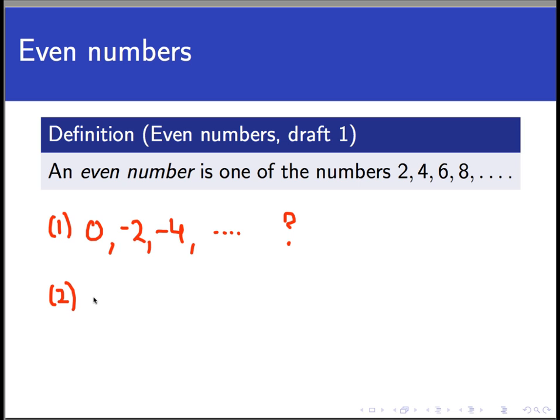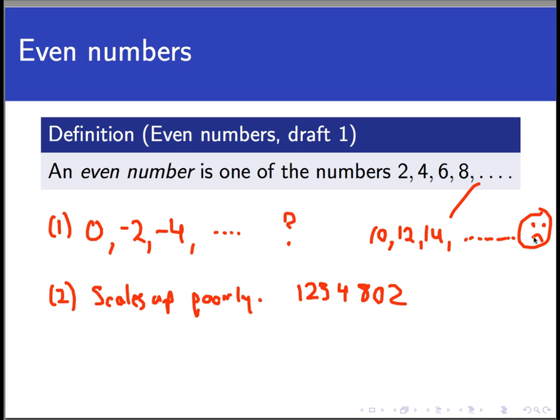And second of all, this definition doesn't scale up well. That means it doesn't provide an easy way to tell if a new number is or isn't even. For example, let's look at the number 123,4802. Now is that number even or not? The only way to tell from this definition is to try to extend the list out until we get into the neighborhood of this number and see if 123,4802 is in it. Now that's really inefficient and takes a long time. And in fact, that's not how you determine whether that number is even or not anyway.